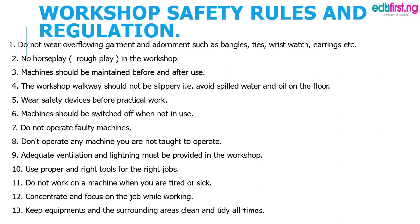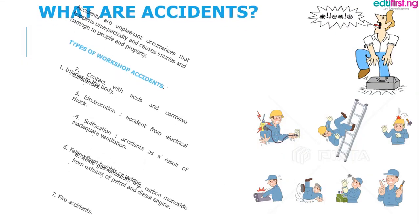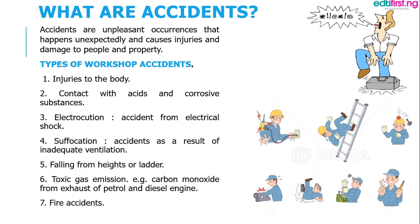If you don't do that, then an accident could occur. What are accidents? Accidents are unpleasant occurrences that happen unexpectedly. Examples are injuries to the body, contact with acids, electrocution, suffocation, falling from heights or high ladders, toxic gas inhalation, and fire accidents.